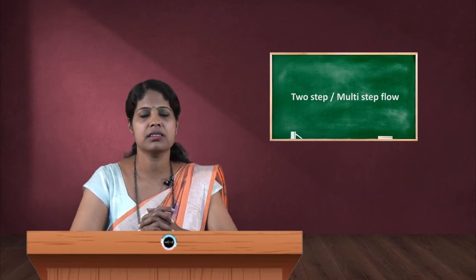If you can see the model of two-step flow here, Katz and Lazarsfeld developed the two-step flow theory of mass communication. You can see there is mass media, and mass media disseminates information to people. The big circle indicates the opinion leader, who is quite influential among the public, and then the opinion leaders transfer their message to people who are considered opinion followers.